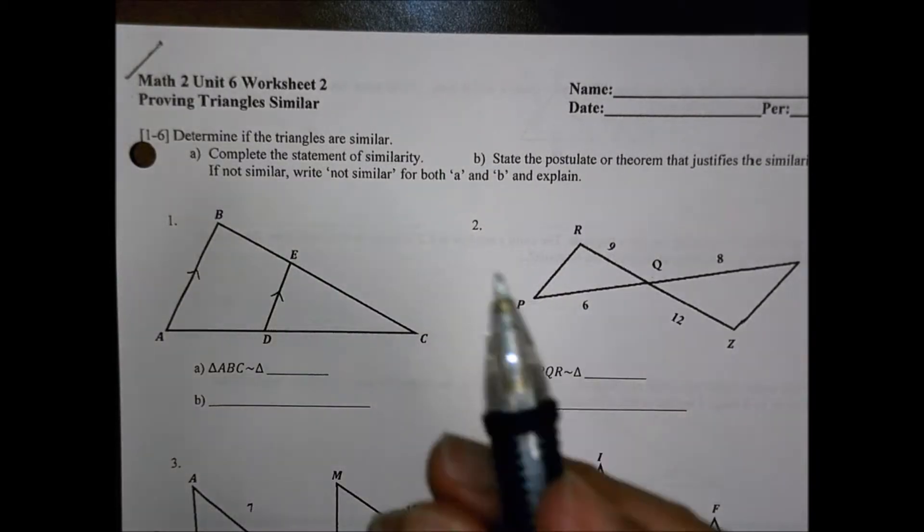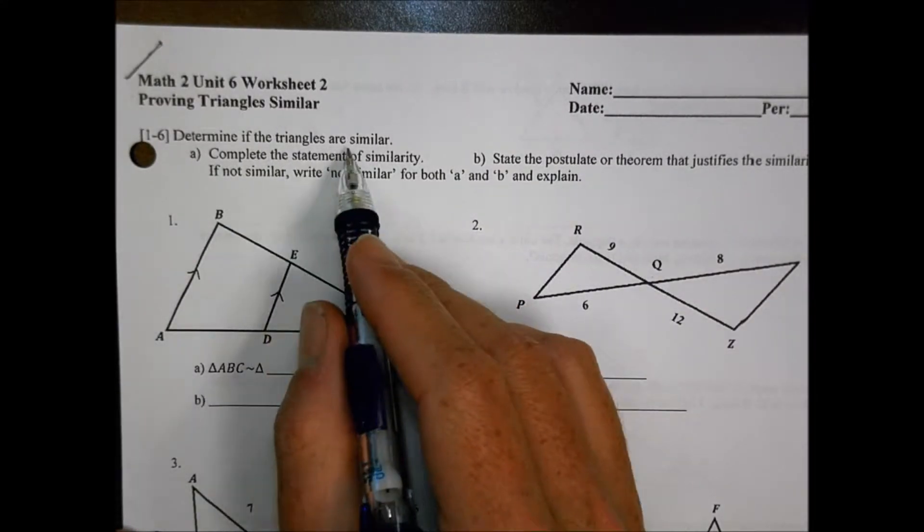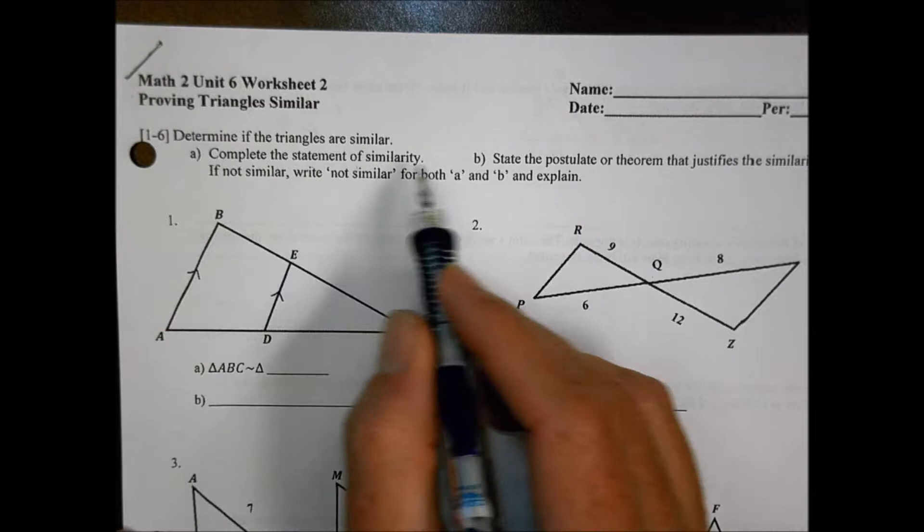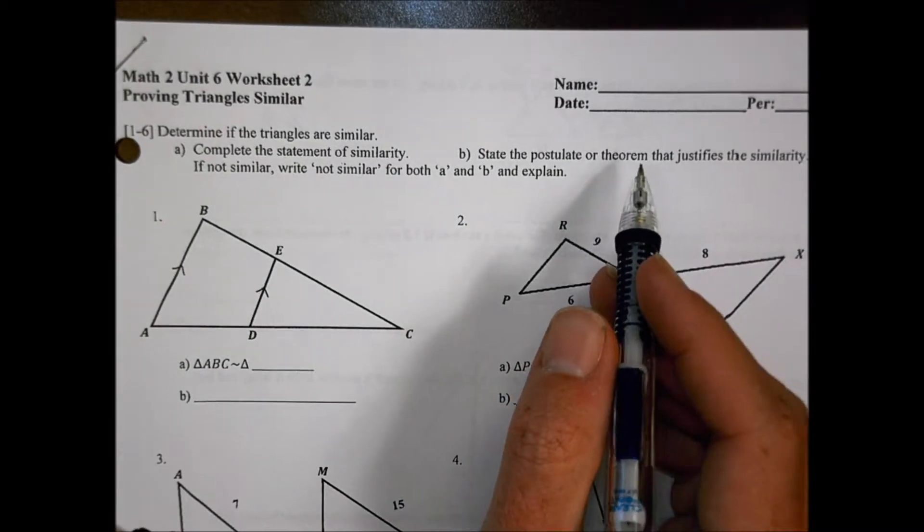Hey, this is Math 2, Unit 6, Worksheet Number 2, called Proving Triangles Similar. Determine if the triangles are similar, then complete the statement of similarity, and state the postulate or theorem that justifies the similarity. If they're not, just say not.